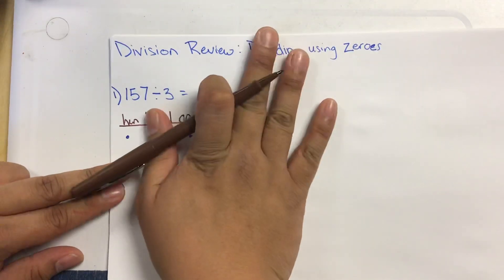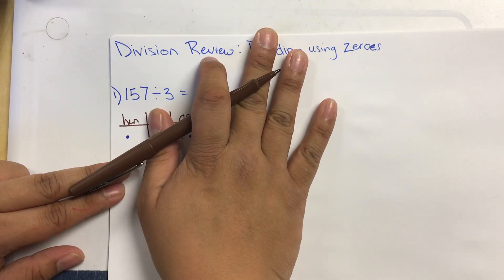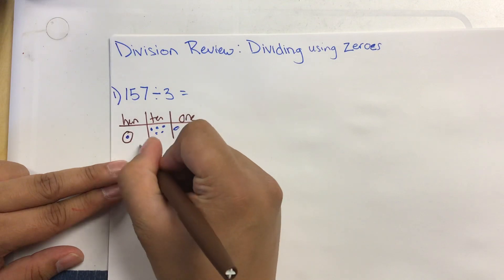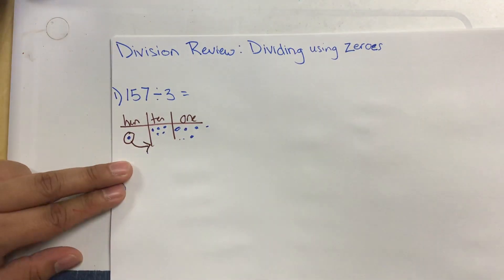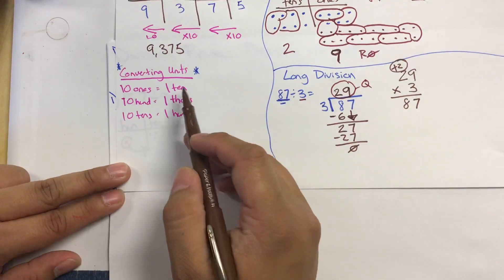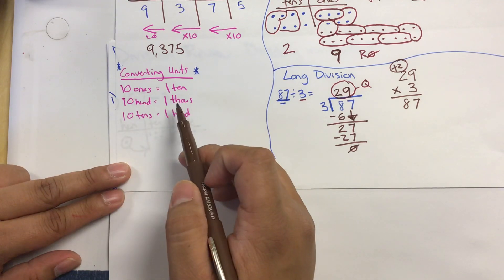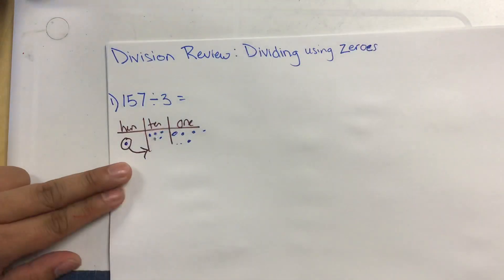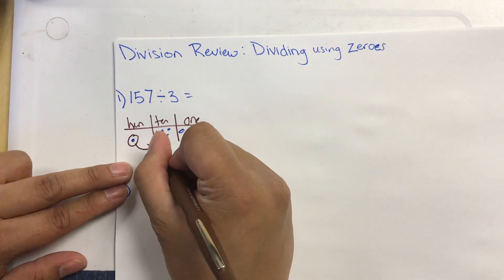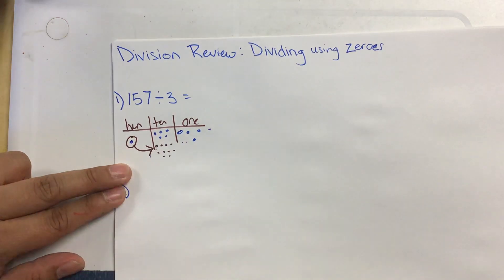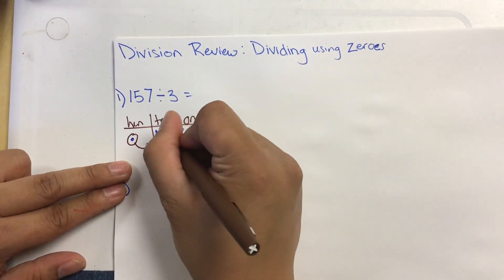Starting with our hundreds place, we only have one hundred, so we can't put that into groups of three. What we can do is convert this hundred into ten tens — remember from the last video how we can convert units: one ten into ten ones, one thousand into ten hundreds, and one hundred into ten tens. So I'm going to turn this 100 into ten tens: one, two, three, four, five, six, seven, eight, nine, ten.